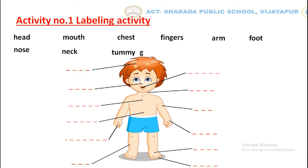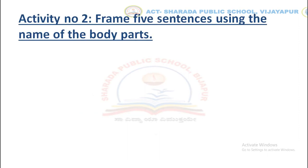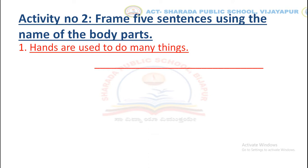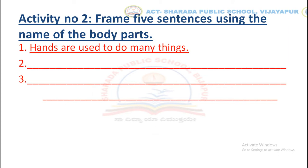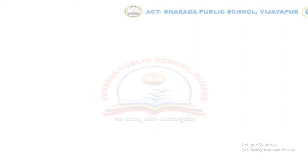Now, Activity Number Two: frame five sentences using the names of the body parts. One has been done for you — 'Hands are used to do many things.' Now let's move to Activity Number Three: look at the picture and label the parts of the hand and leg.